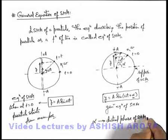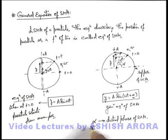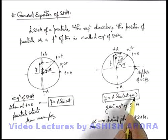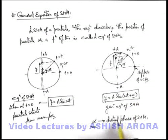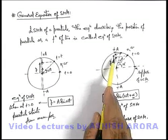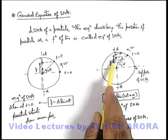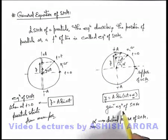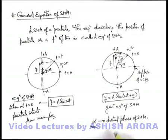So we can state in this situation, alpha is regarded as the initial phase of SHM. Whenever we are given an SHM equation, the initial phase gives us an idea about from which point the particle was starting SHM at t equal to zero, or at the initial moment of time.